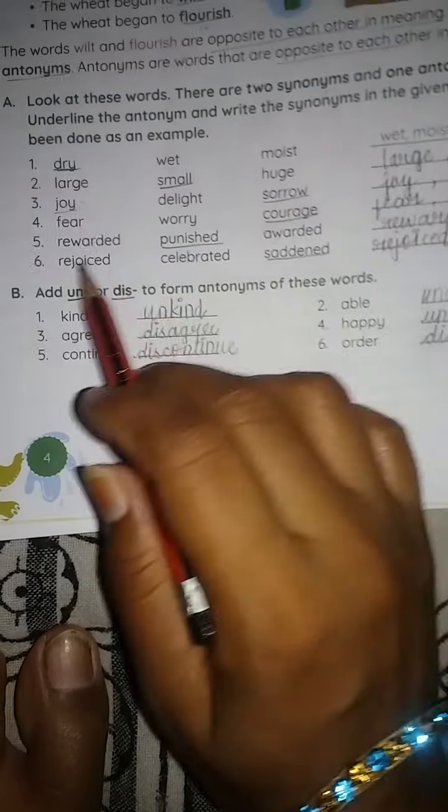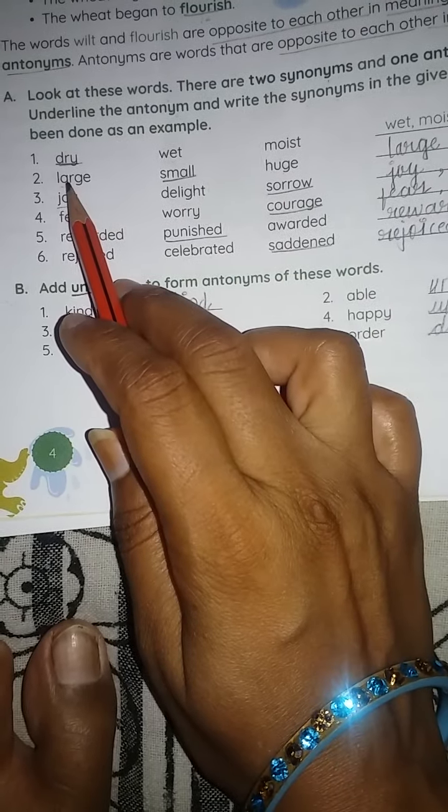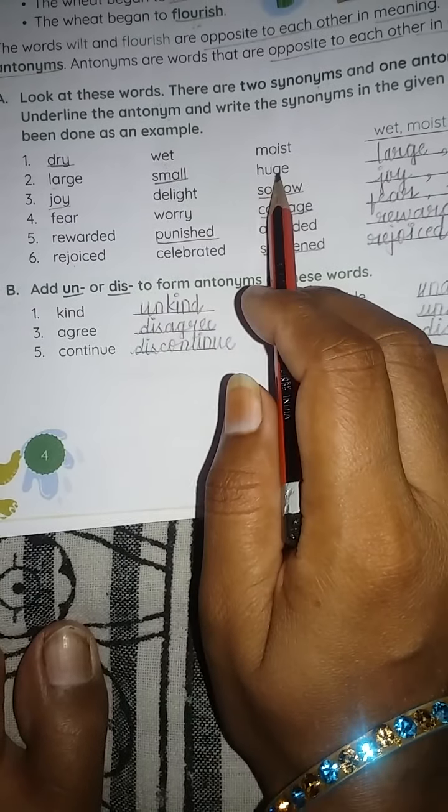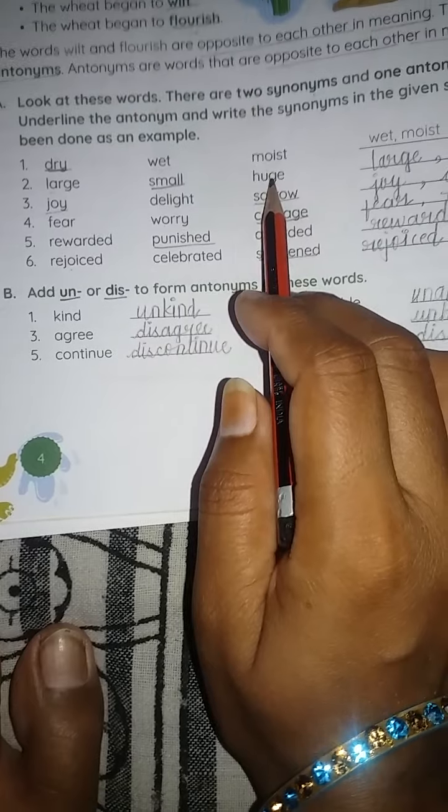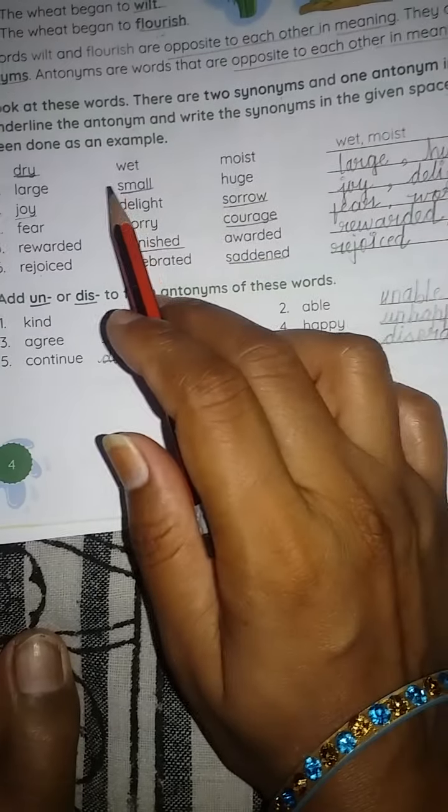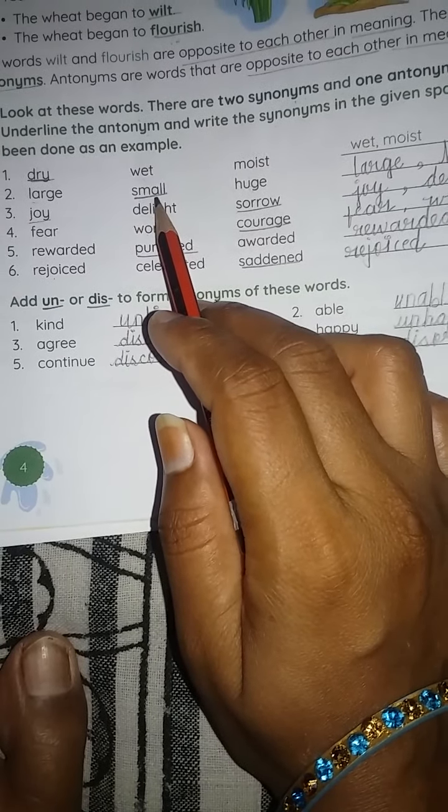Same way we need to do the second one: large, small, huge. Large means bada, small means chhota, huge means very big. So large and huge, they have the same meaning. So these two are synonyms, so we write them here. Large, huge. And small is the antonym of these two, so we underline it.